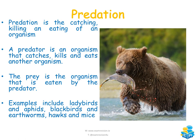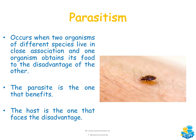Predation is the catching, killing, and eating of another organism. The predator is the one that catches, kills, and eats — the prey is the organism that is caught and eaten. Examples include ladybirds (predator) and aphids (prey), blackbirds and earthworms, and hawks and mice.